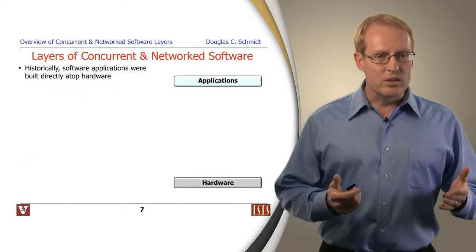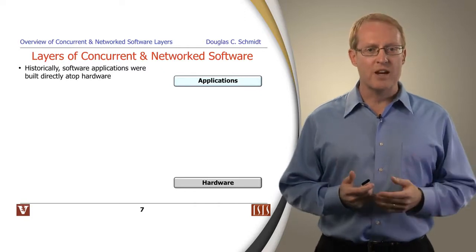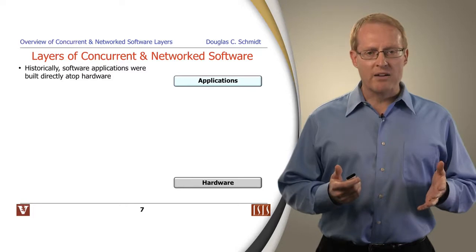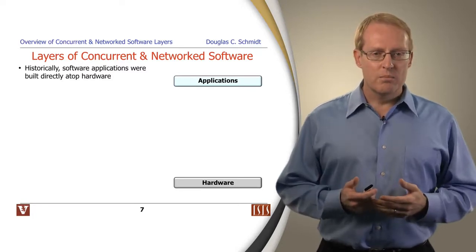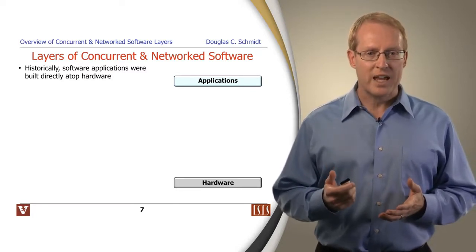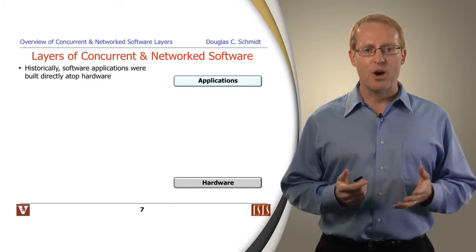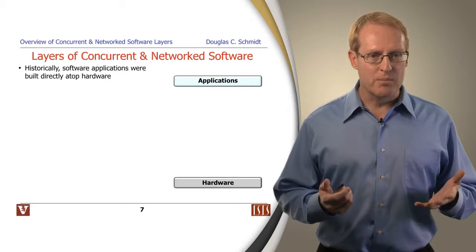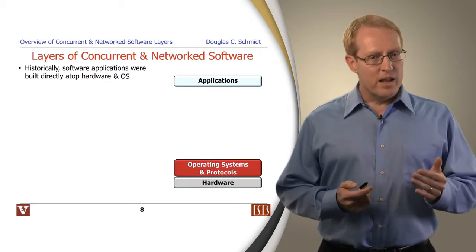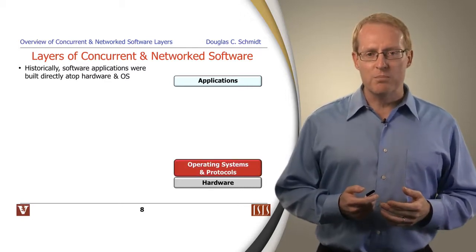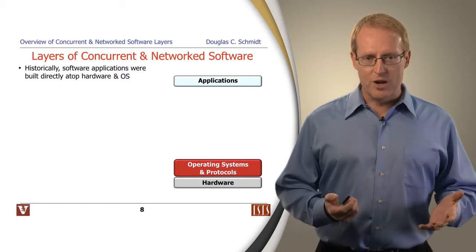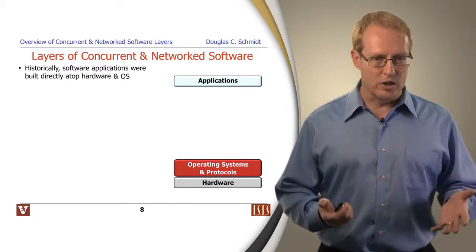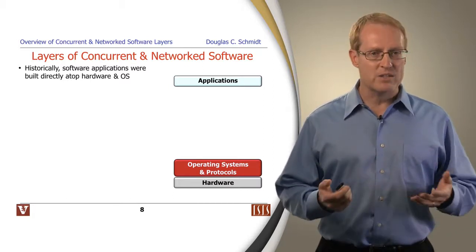Let's talk about some of the common layers of concurrent and network software. If you go back 50 years ago or so, people had a tendency to develop software applications directly atop the hardware — the abstraction simply hadn't developed and matured at that point. If you went back about 40 years ago, you'd find that most people were building software applications on top of operating systems and protocol stacks, things like early versions of Unix, VMS, and so on.